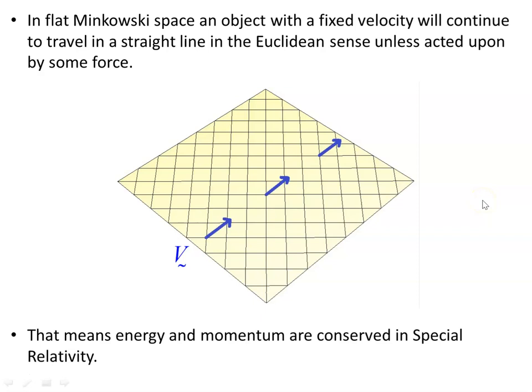Two straight lines are parallel, never diverging, never converging, remaining the same distance apart. So that means energy and momentum are conserved in special relativity. I went through all that in the last video, so see that video.